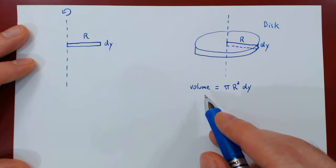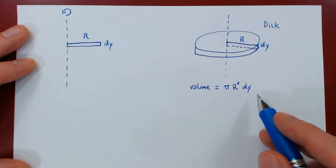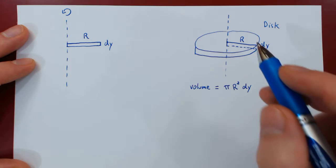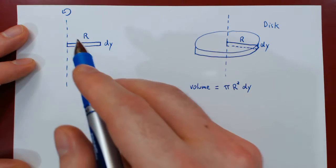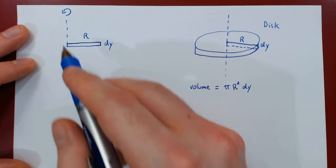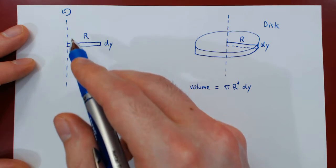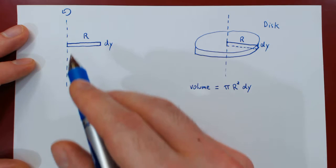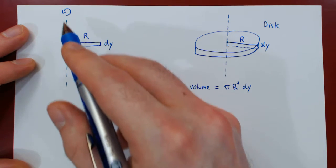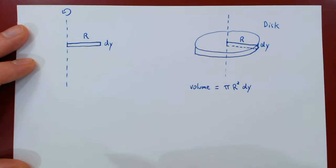This is how you obtain the volume of a small disk created by revolving a rectangle about an axis of revolution, when the rectangle is perpendicular to and touches the axis of revolution.